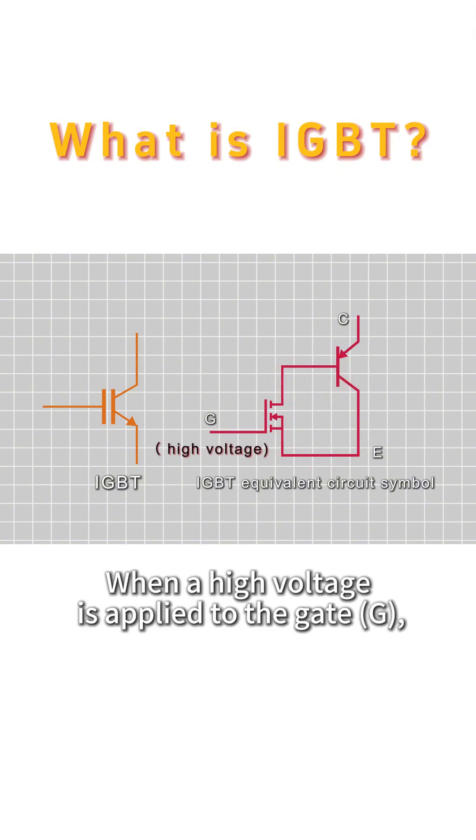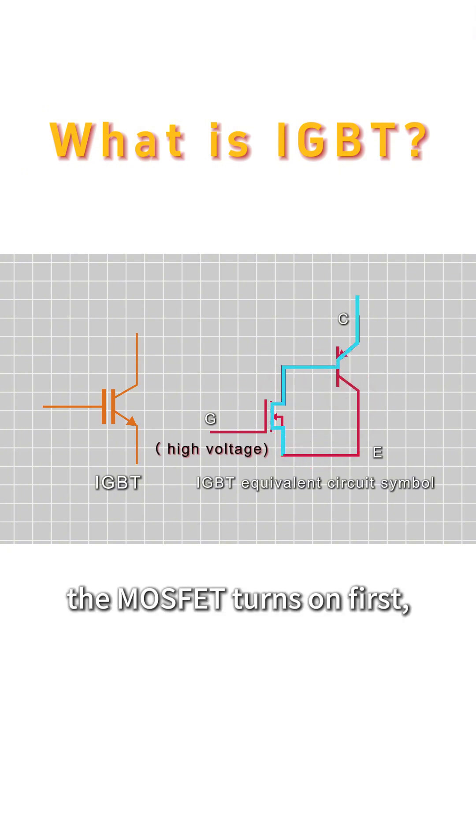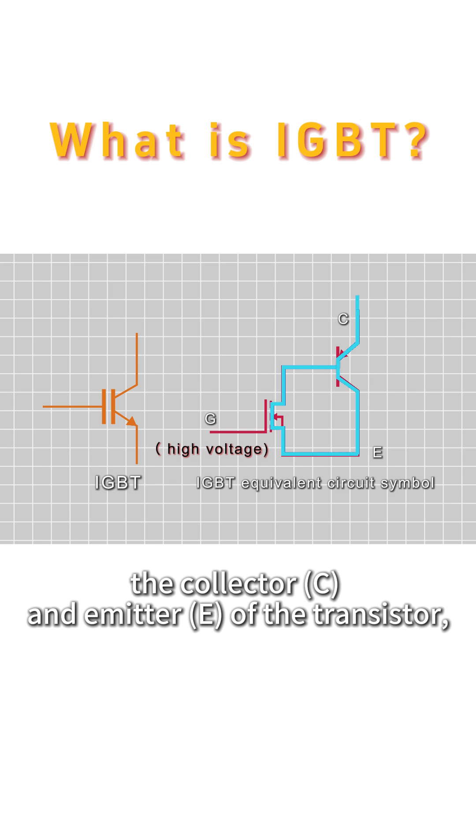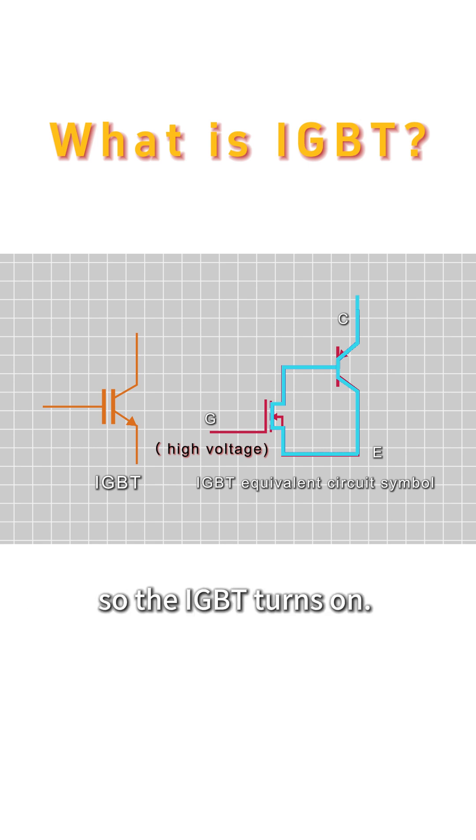When a high voltage is applied to the gate, the MOSFET turns on first, and then the current flows through the collector and emitter of the transistor, so the IGBT turns on. This is the principle of IGBT.